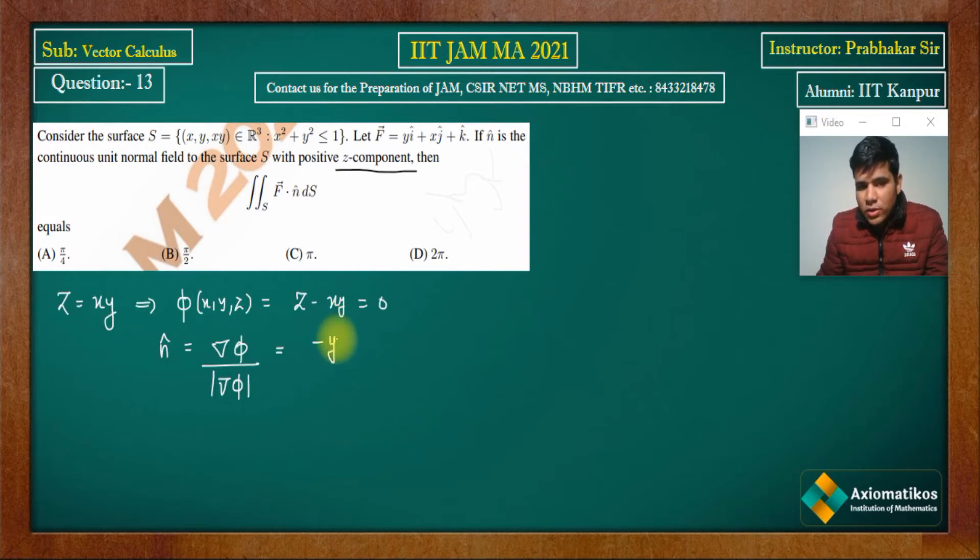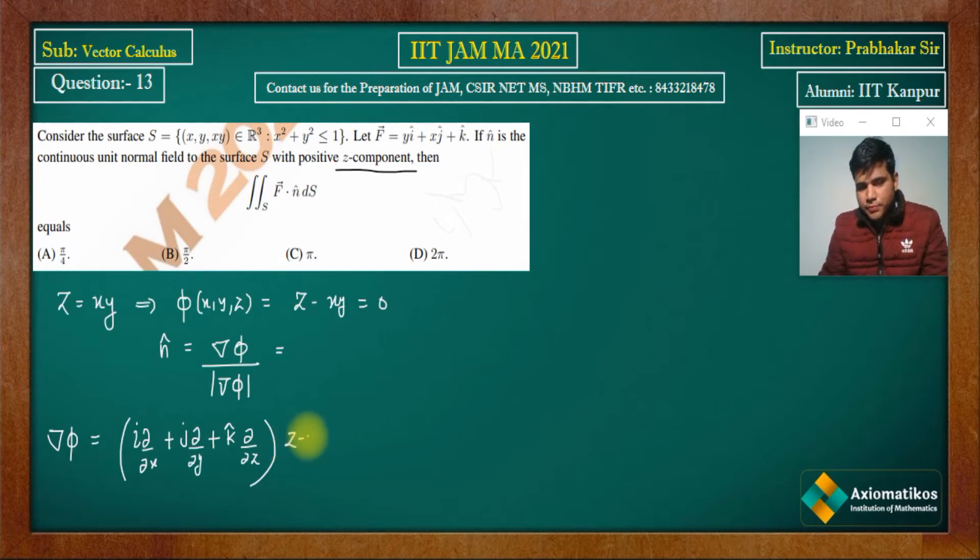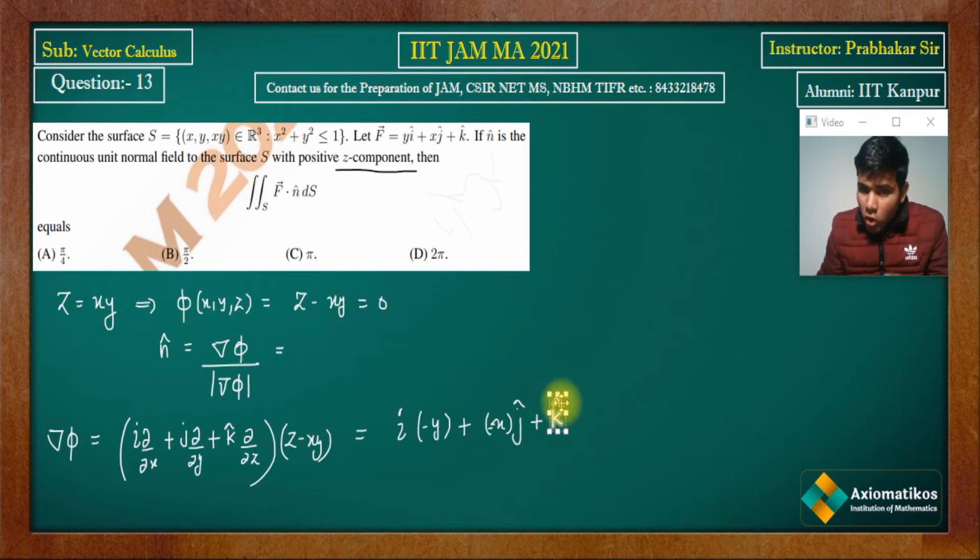I calculate del phi simply. So del phi equals i ∂/∂x plus j ∂/∂y plus k ∂/∂z. And phi I have given you, so phi is what? When you differentiate, minus y with respect to x, minus x with respect to y, and with respect to z, it's k. So minus y i minus x j plus k.